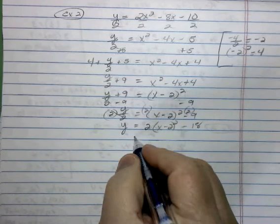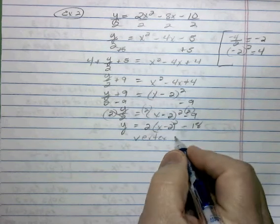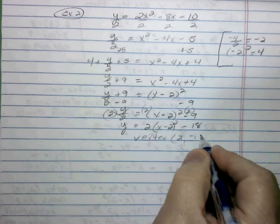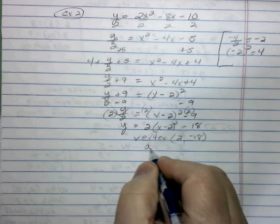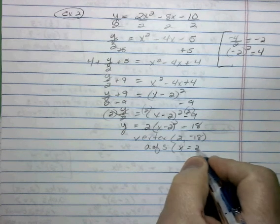So our vertex from this is going to be 2, negative 18. Our axis of symmetry is going to be x equals 2.